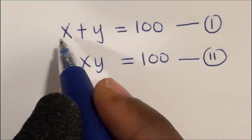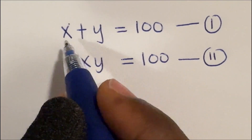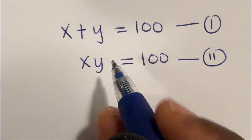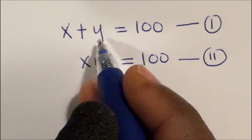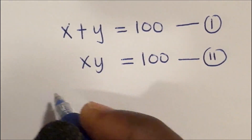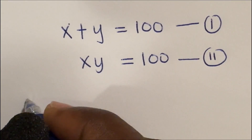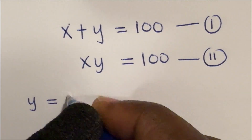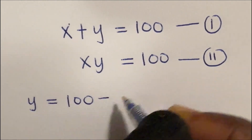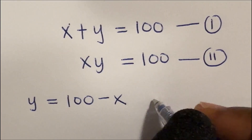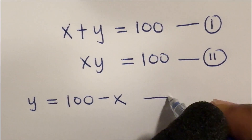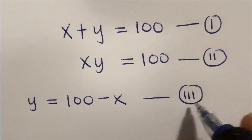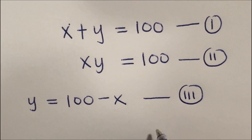From equation 1, we can make either of the variables x or y the subject of the formula, and I'm going to use y in this case. So from equation 1, y is the same thing as 100 minus x. Let's call this equation 3. We are going to refer back to this in a very short while.